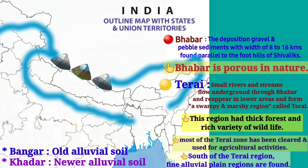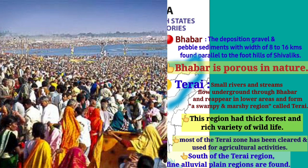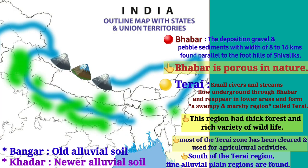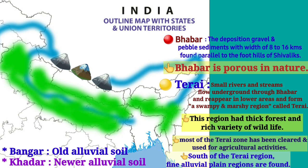The reasons for high population density in the Indo-Gangetic Plains are that perennial rivers supply water year-round, making the soil very fertile, which encourages people to settle in the Indo-Gangetic Plains and cultivate more crops throughout the year.